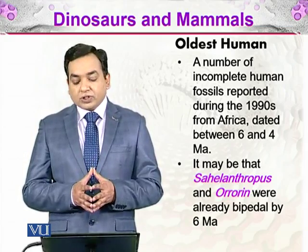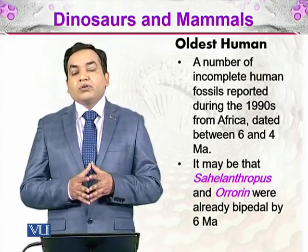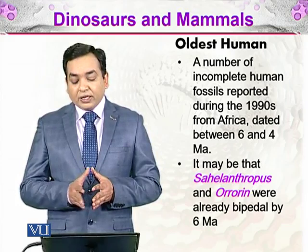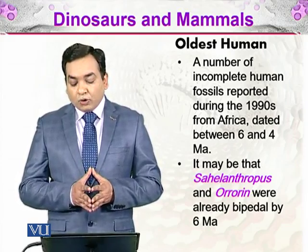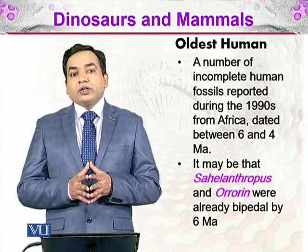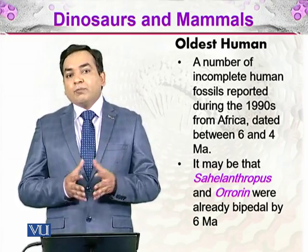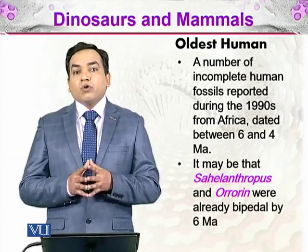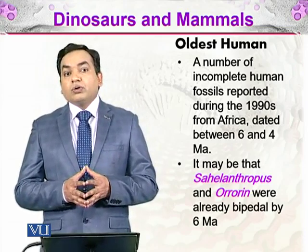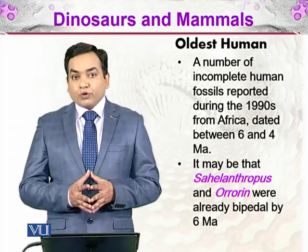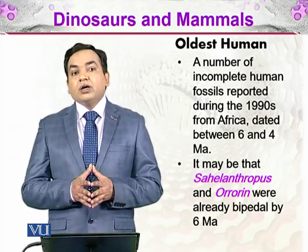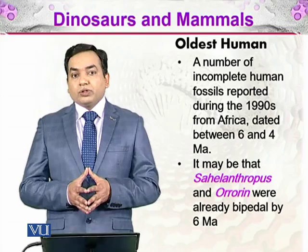Incomplete human fossils discovered in Africa during the 1990s suggest that Sahelanthropus and Orrorin may have already been bipedal by 6 million years ago. Bipedal means walking on two feet — other apes still walk on four feet. So 6 million years ago, these ancestors were the first to start walking on two feet.